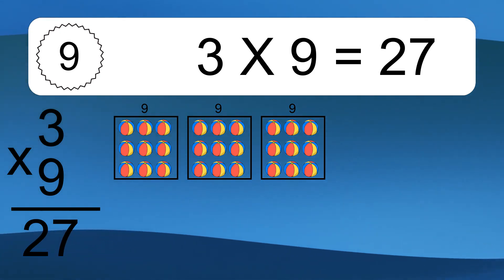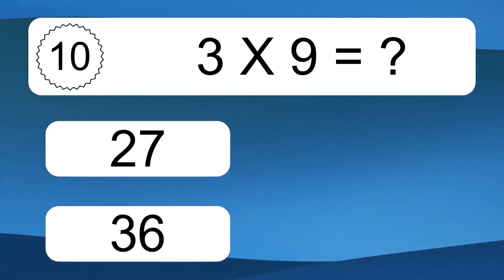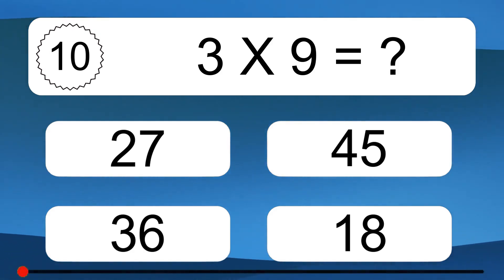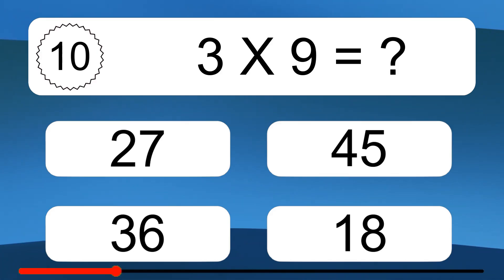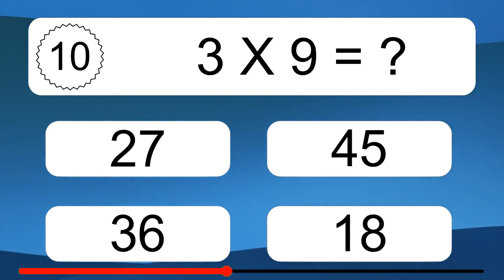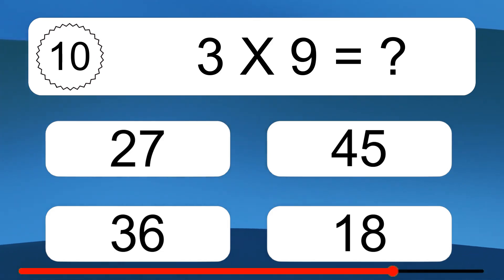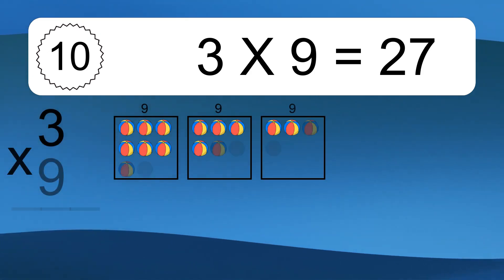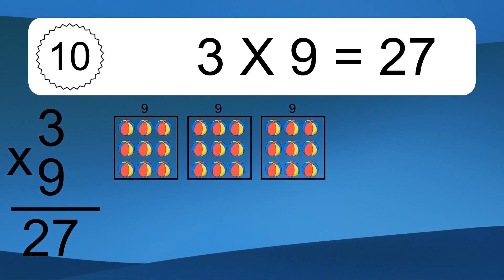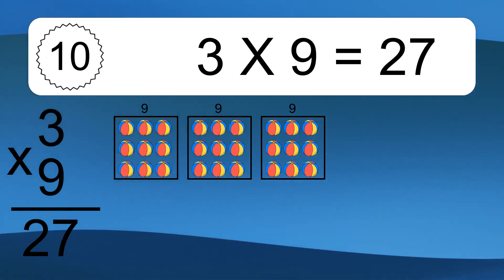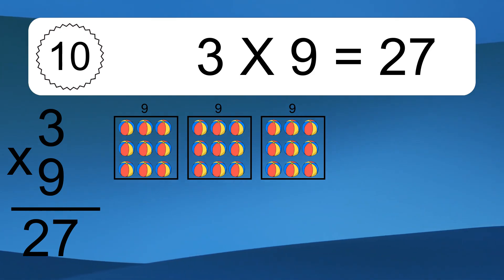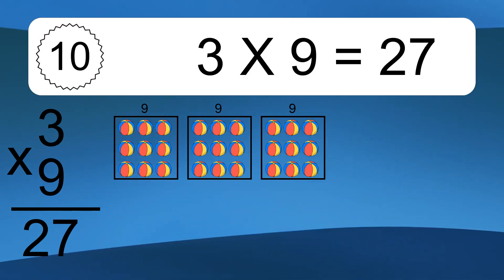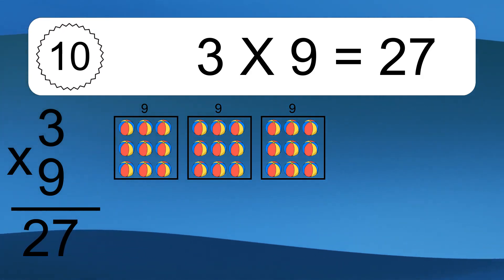Three times nine equals what? Three times nine equals 27. We have three boxes, and each box has nine colorful balls inside. If you count all the balls in all the boxes together, you will have 3 times 9 balls. This equals 27 balls.